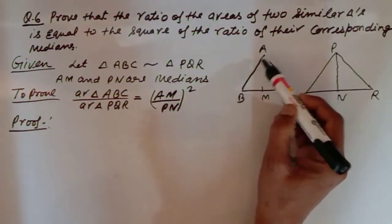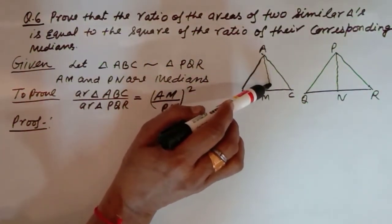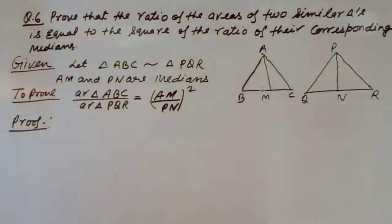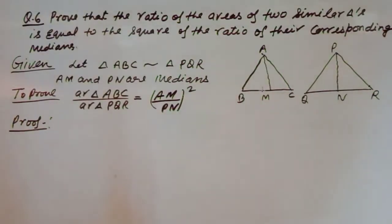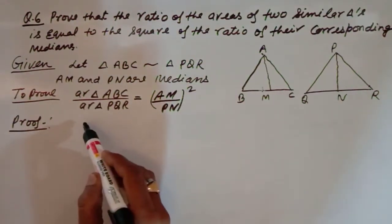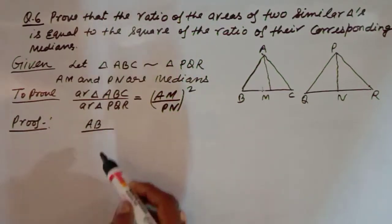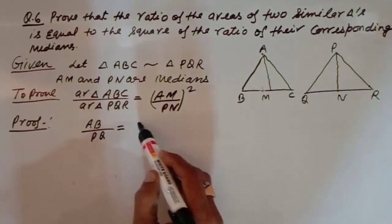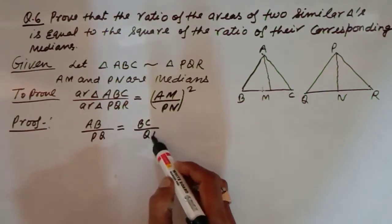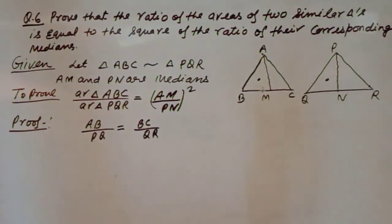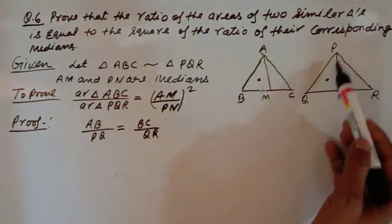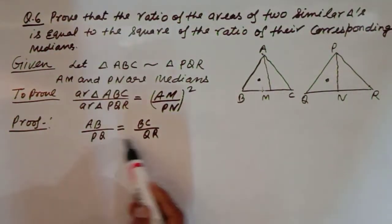Students, AM and PN are medians — they are never perpendicular, they appear straight but we will not treat them as perpendicular because the question only states they are medians. Since these two triangles are similar, the ratio of their corresponding sides is equal: AB/PQ = BC/QR. We need these two sides because we will first prove the smaller triangles similar — triangles ABM and PQN — so we need these values.